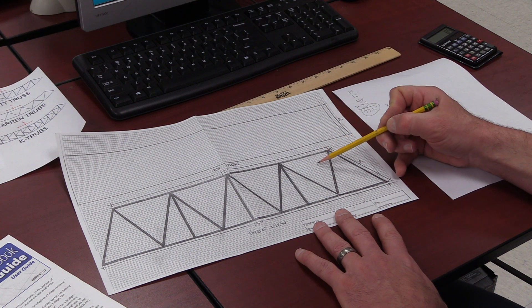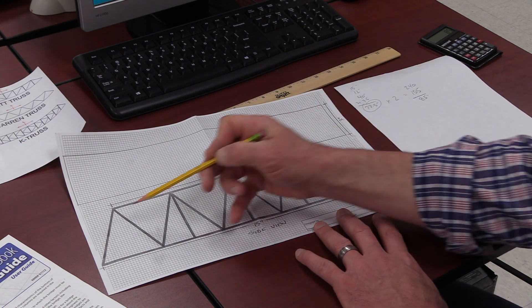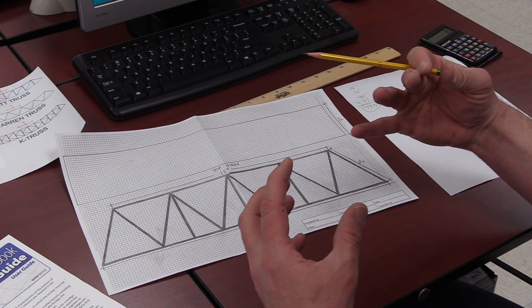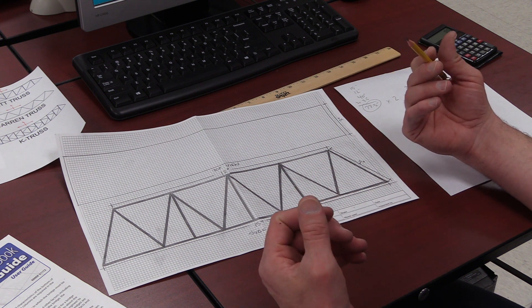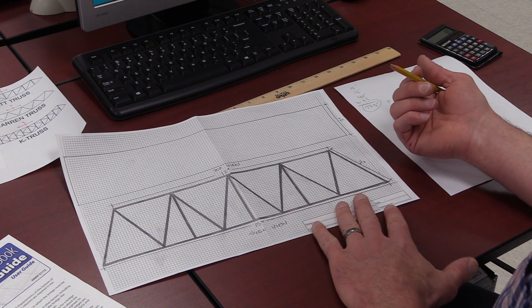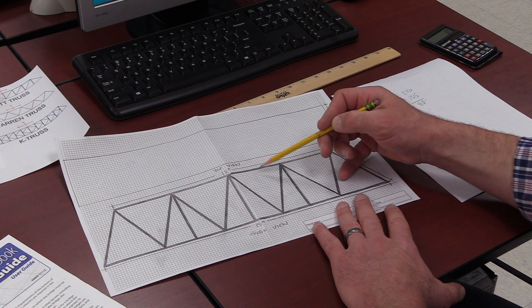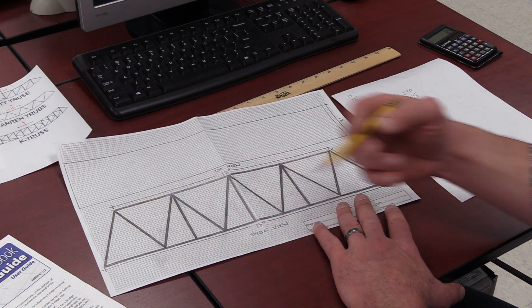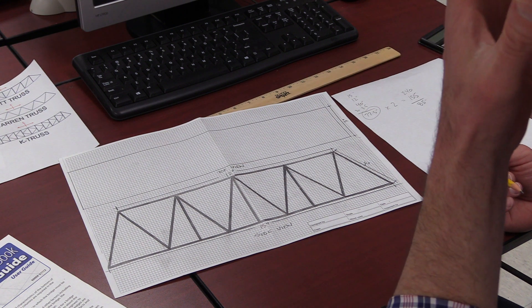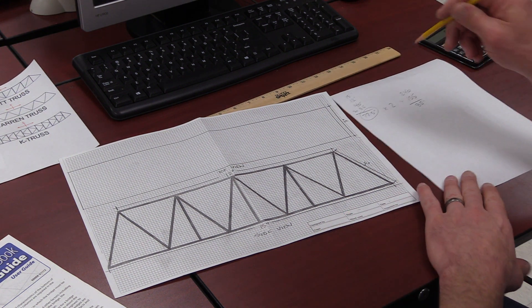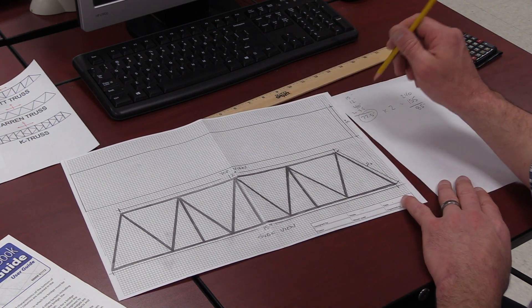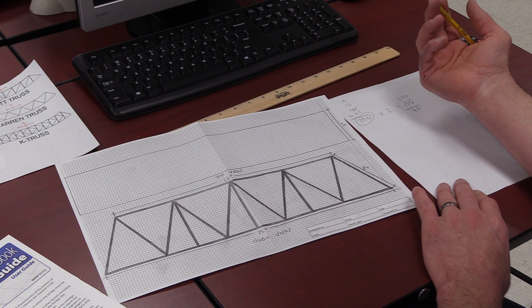I might add another vertical web here and here to stiffen it or to make that bridge a little more rigid. Heck, I could probably even add verticals at each one of these triangles. I would just have to go through the same exercise that I did here and see if it works.